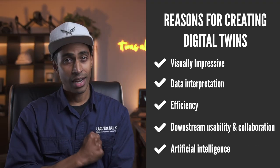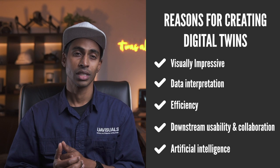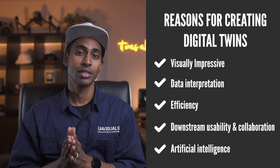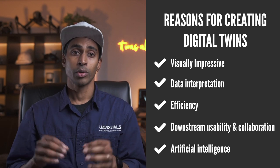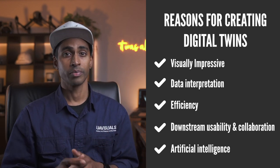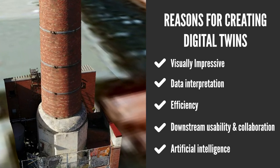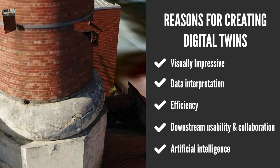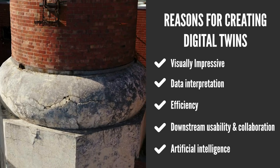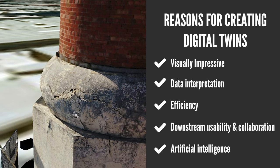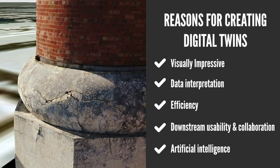And finally, number five: AI or artificial intelligence. This isn't actually that far off — it already exists in some inspection programs and we'll start seeing more of it very soon. Basically the software will pick up any discrepancies or differences from previous historical data sets and tell you in seconds what's going on. For example, the software might flag a crack in a wall that wasn't there last time you inspected. Very powerful stuff.